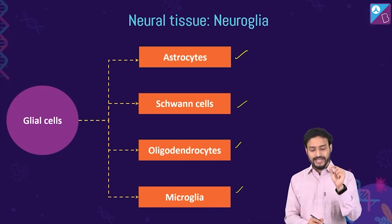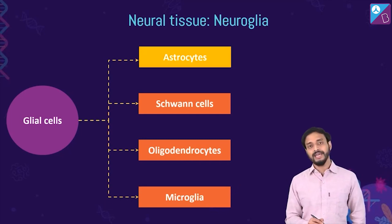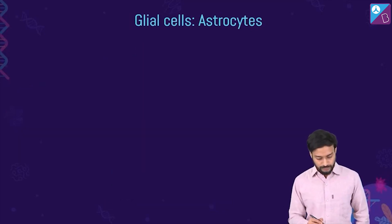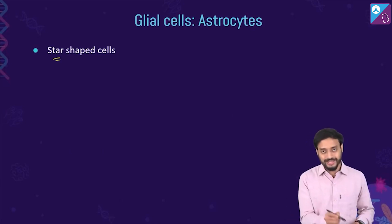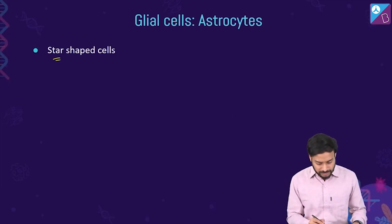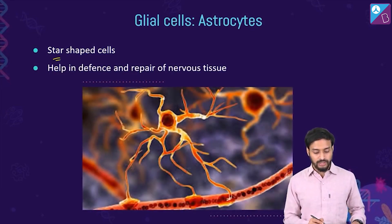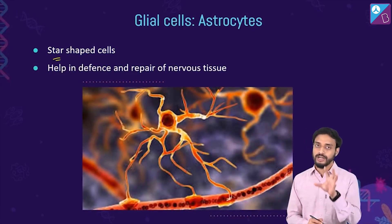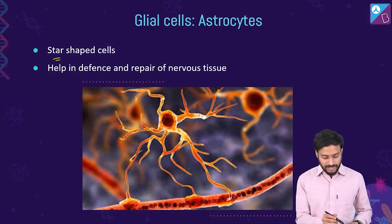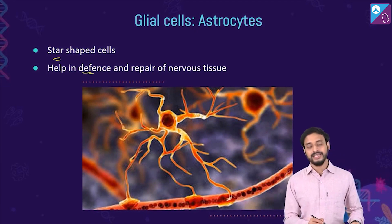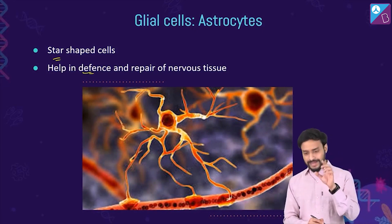Astrocytes are star-shaped cells — the name 'astro' reflects their star shape. They help in the defense and repair of nervous tissues.